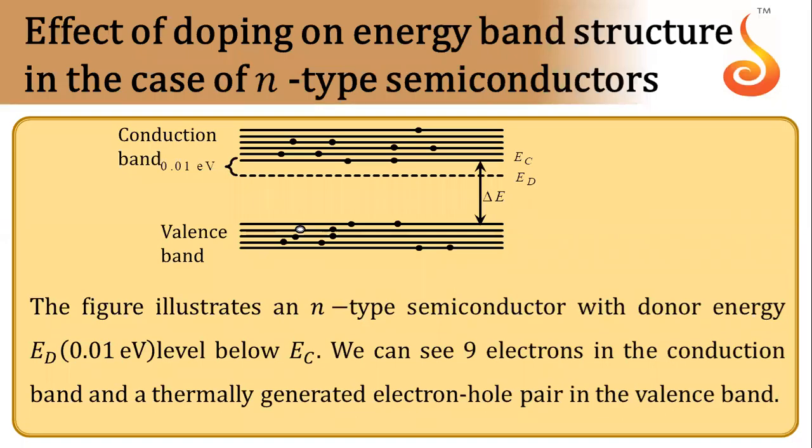Because of the addition of impurity, an additional energy level called donor level is introduced which is closer to the conduction band. As you can see from the diagram, this is your donor level.